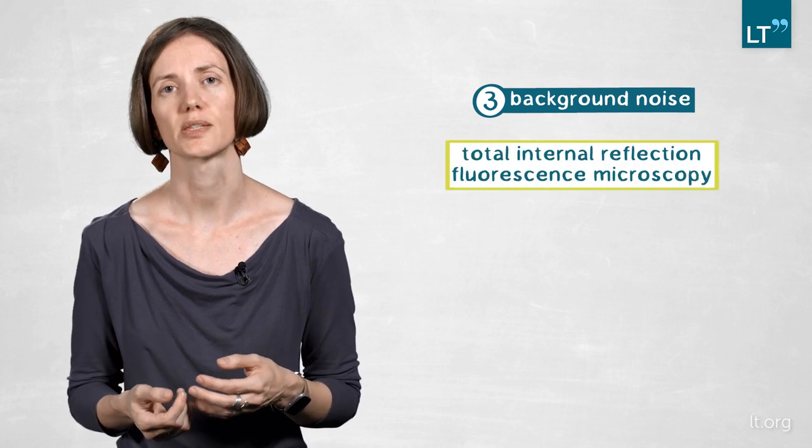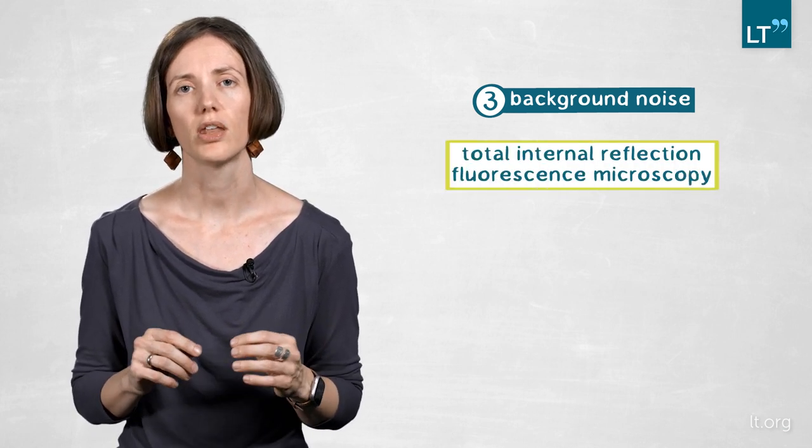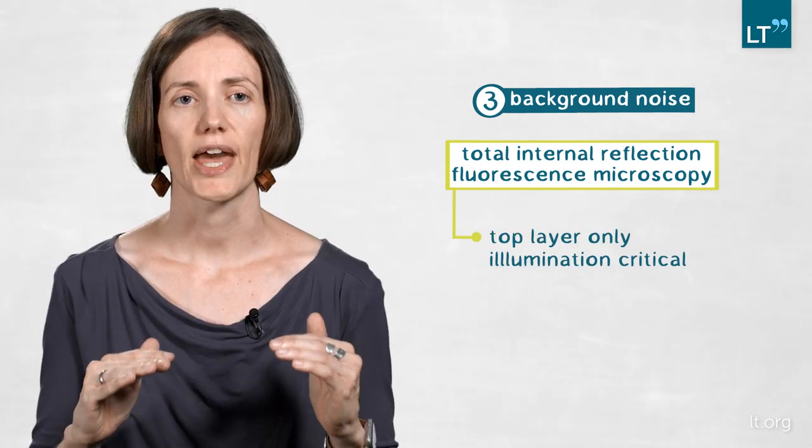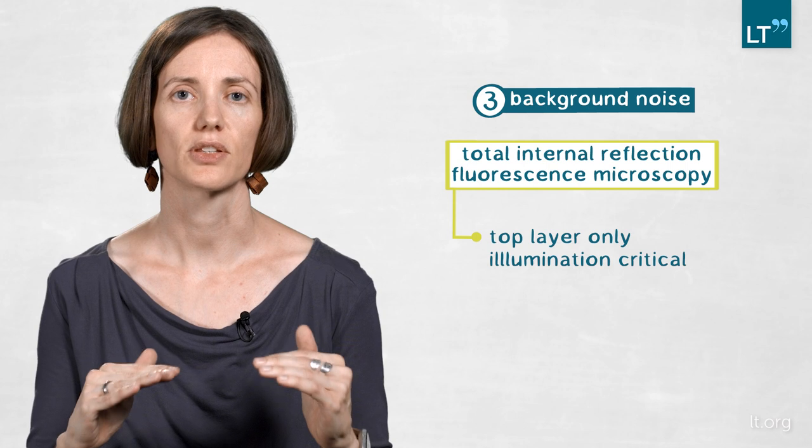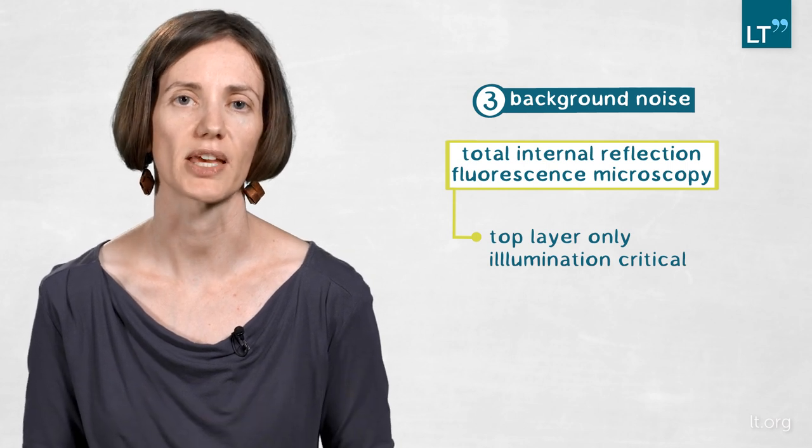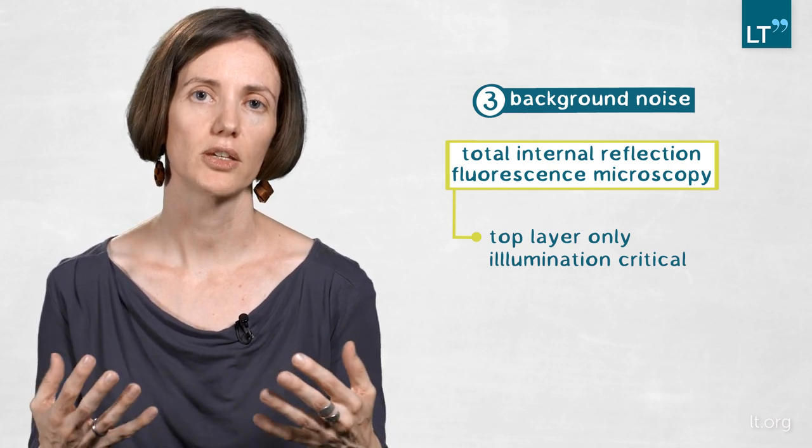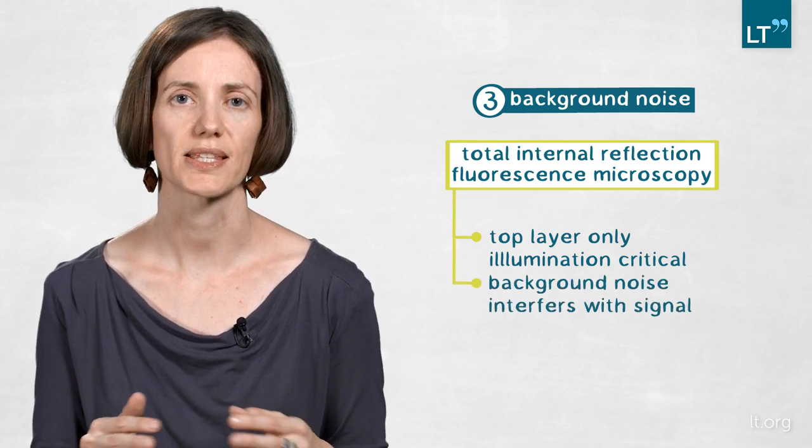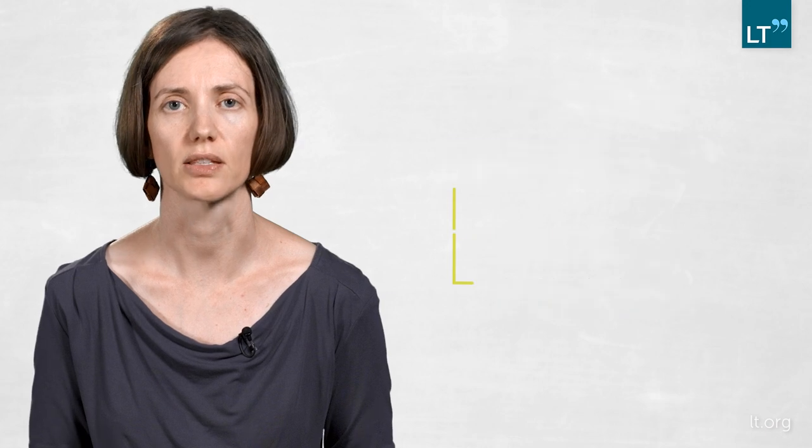The third thing we looked into was the background noise. If you do total internal reflection fluorescence microscopy, it's all about just illuminating the top layer. So you're actually just looking at the top cells of your specimen and everything you get from the volume behind is more or less a background noise messing up your fluorescence signal.